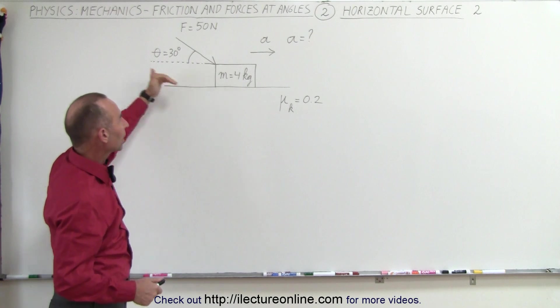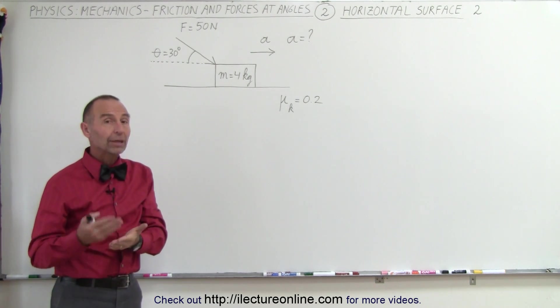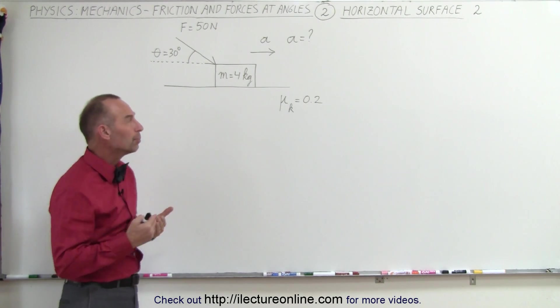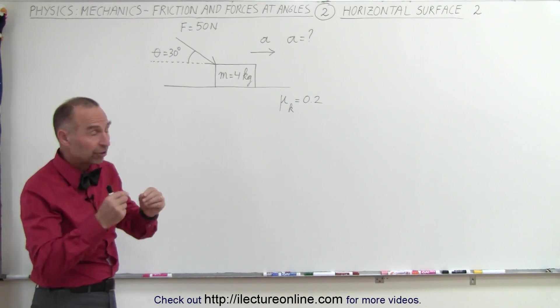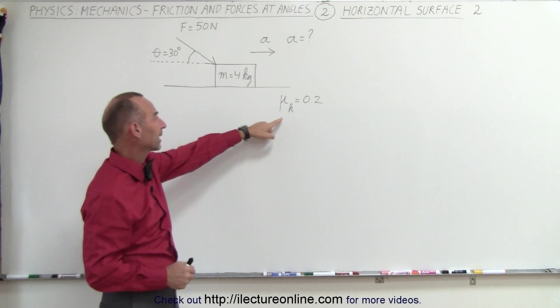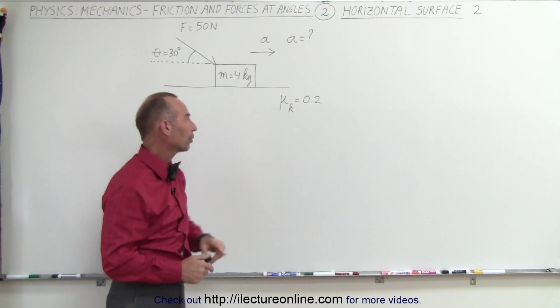Again, the force is applied at an angle which means it's going to have both a vertical and a horizontal component, which will affect the friction force between the block and the surface. Notice the kinetic coefficient of friction is 0.2.